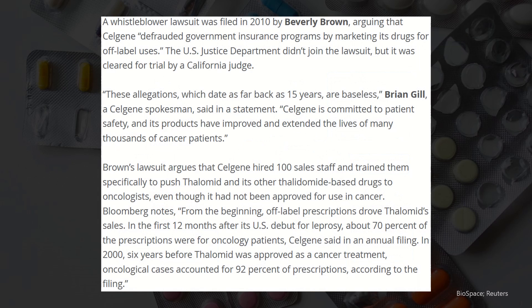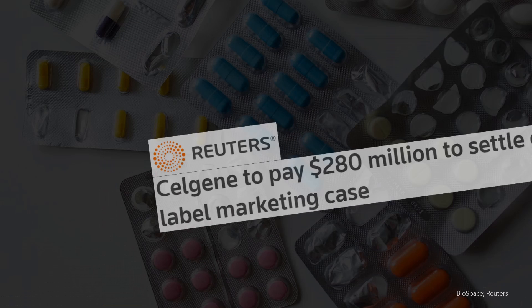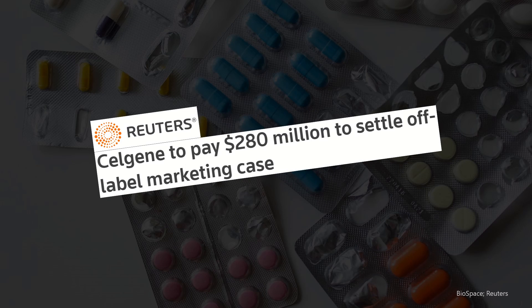The new early days of thalidomide remained controversial with a whistleblower lawsuit accusing Celgene of off-label marketing. Allegedly, they actively pushed thalidomide — approved for leprosy — to be off-label prescribed to cancer patients prior to its cancer approval. While these off-label prescriptions extended thousands of lives, intentional off-label marketing by companies is not compliant. They ultimately had to settle the lawsuit for 280 million dollars.